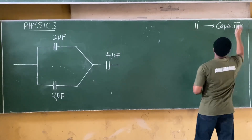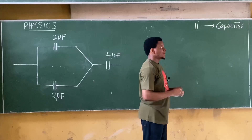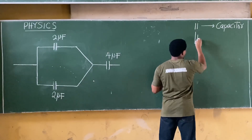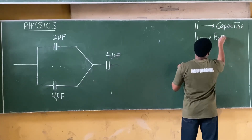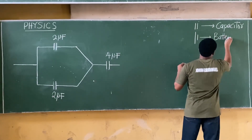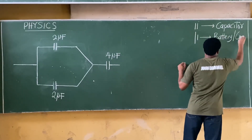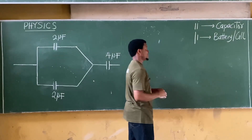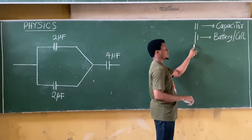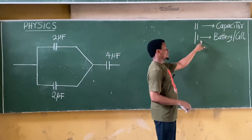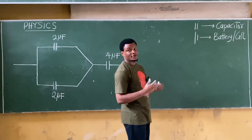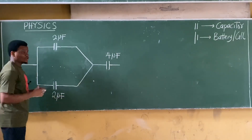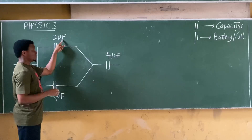If you have this symbol in a circuit, it means capacitor. Note that if one bar is longer than the other, what you have is actually a battery or a cell. Please differentiate between a capacitor and a battery: for a battery or cell, one bar is longer than the other, while for a capacitor they are of equal length.